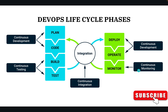After monitoring, we find some bugs and it goes back to continuous development — back to the plan and coding stage. This is an infinite loop where we are building new products and incorporating new features in every sprint.